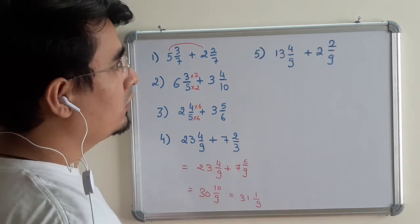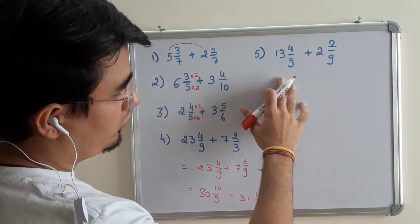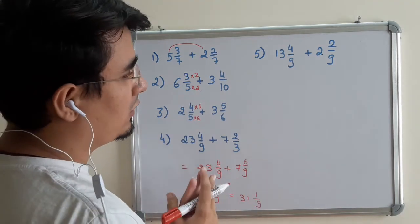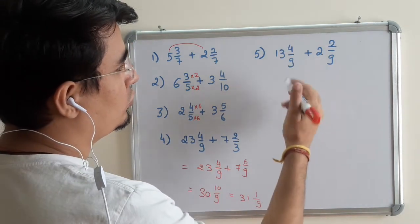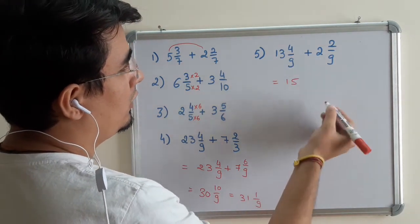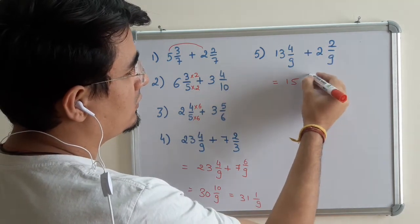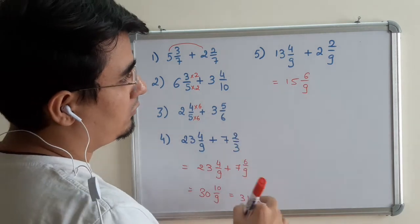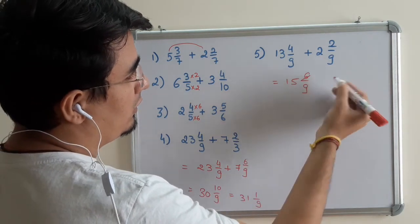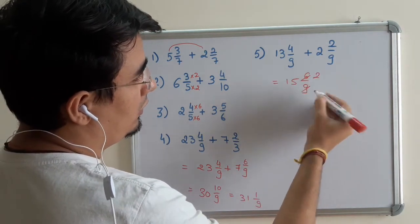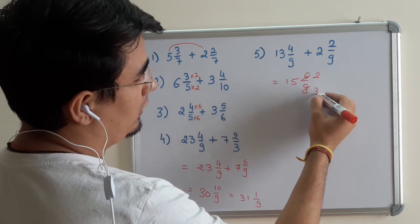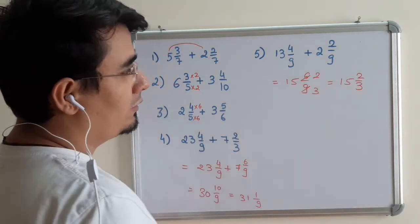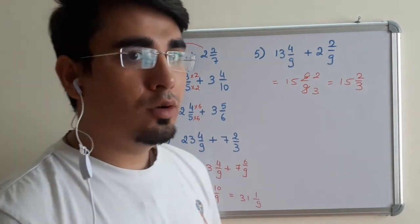My last question I have taken to explain last concept in this. Similarly, the denominator is same. I have taken an easy question. 13 plus 2 is 15, and denominator is same, 6 upon 9. Right now this is a proper fraction but it can be reduced. So dividing it by 3, we get 2 and 3 here. So answer is 15, 2 by 3. This is how we can add any 2 mixed fractions.